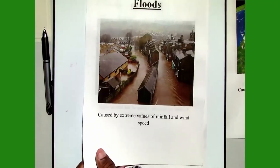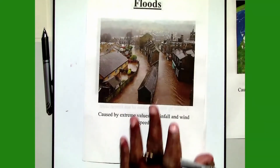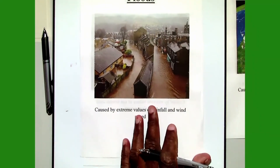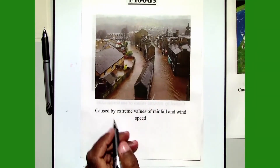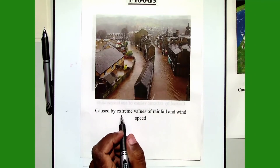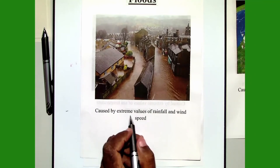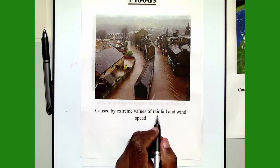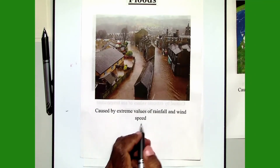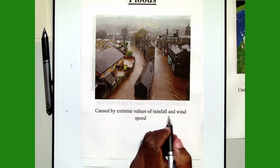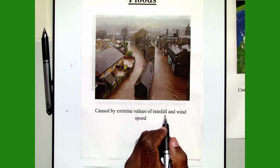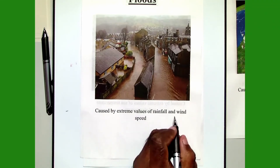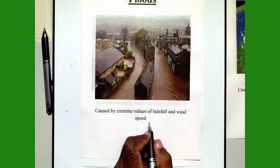The second example is floods. Floods are caused by extreme values of rainfall and wind speed. So you are interested in extremes of rainfall and extremes of wind speed — two variables.